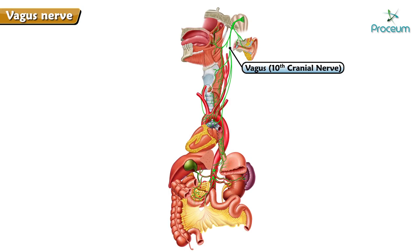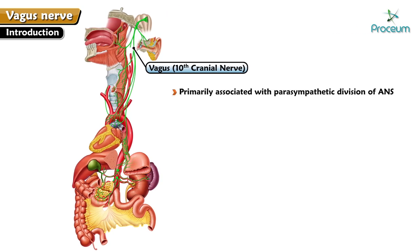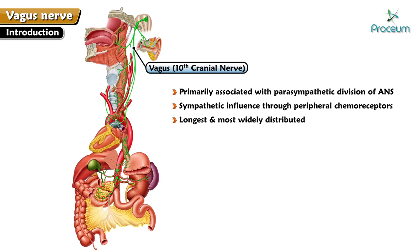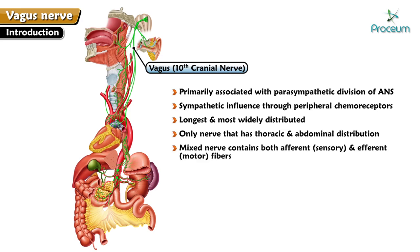The vagus nerve, or the 10th cranial nerve, is primarily associated with the parasympathetic division of the autonomic nervous system. However, it also has some sympathetic influence through peripheral chemoreceptors. The vagus is the longest and most widely distributed cranial nerve, and the only nerve with thoracic and abdominal distribution.